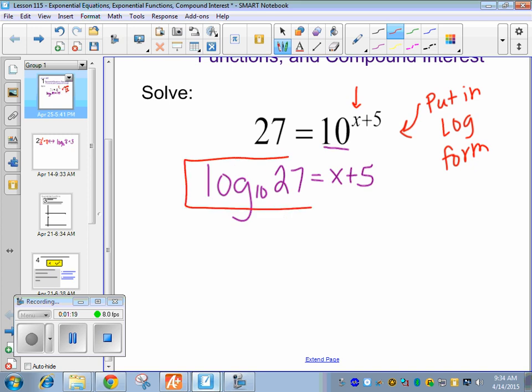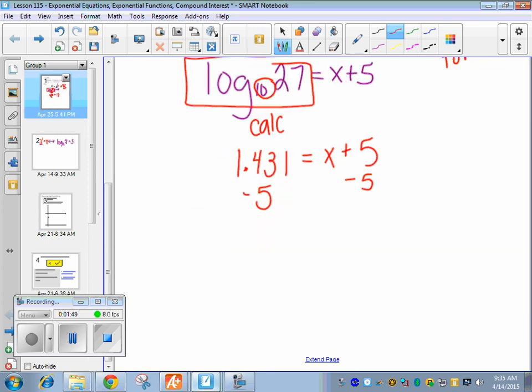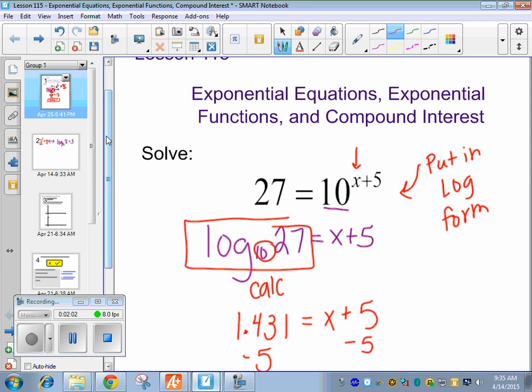Okay, this is a calculator value. We now can use our calculator to get this lovely decimal, rounded to 3 decimal places. So we got 1.431. Remember the 10 is given. You don't have to plug that in. And then we just subtract 5 from both sides to finish isolating for x. And we get negative 3.569 equals x. So the most important thing to remember is going into log form.